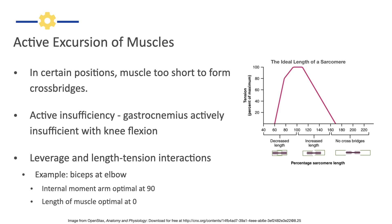For example, with the elbow, the biceps is going to have its most optimum length for generating force at about zero degrees of flexion — so almost straight. However, mechanically it's most effective because of the angle and length of the moment arm, and the angle of pull on the radius — the moment arm of the muscle is greatest at 90 degrees. So we see a pretty good ability of the biceps to generate a large amount of force from zero to 90 degrees because of these two factors. That's one reason why people are stronger at some parts of the range of motion at a joint than others — to some extent due to this length-tension relationship.